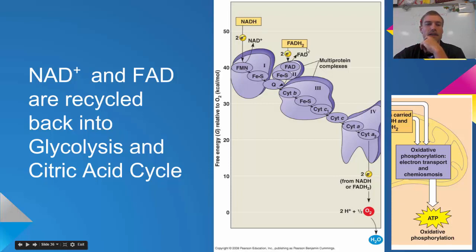The NAD+ and the FAD are then recycled back to glycolysis and the Krebs cycle in order to continue those cycles on.